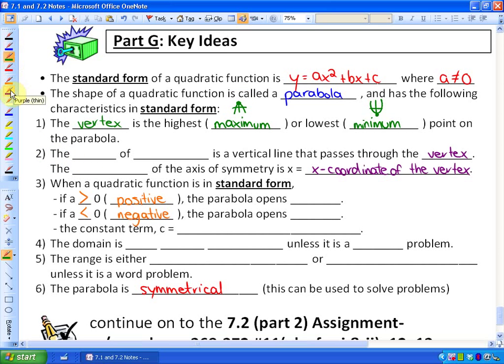The axis of symmetry is a vertical line that passes through the vertex. So the axis of symmetry, if I drew a parabola that opens up, let's say, the axis of symmetry is this vertical line that I have dotted here in purple that passes through the vertex.